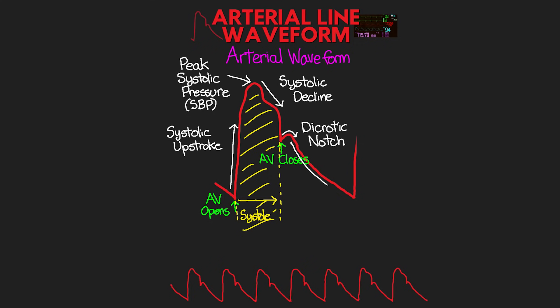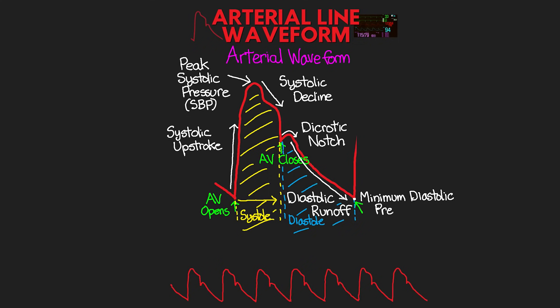After the dicrotic notch, we see a decline in pressure, and this is what we call the diastolic runoff. This is the pressure in the arteries equalizing back down after the increase from systole. This continues until we reach the lowest point, just before the aortic valve opens, and we begin again. From the dicrotic notch to the start of the systolic upstroke, this is all diastole. The lowest point here is our minimum diastolic pressure, and is what's going to be registered as our patient's diastolic blood pressure, or DBP.